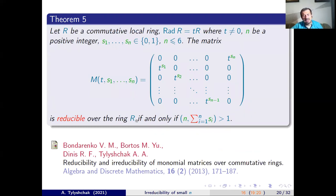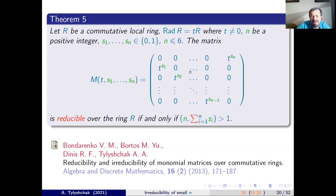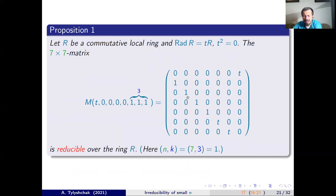So we obtain a result: a matrix of such form is reducible over ring R, where R is a commutative local ring with Jacobson radical generated by a non-zero element T, if and only if the size of the matrix and the sum of all exponents is not co-prime. But again, we find a contradiction in the case of 7×7 matrices.